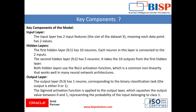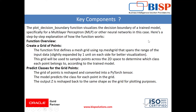The output layer has one neuron corresponding to the binary classification task. The sigmoid activation function is applied to the output layer, which squashes the output value between zero and one, representing the probability of the input belonging to a class.